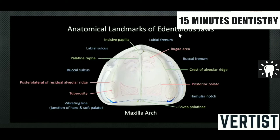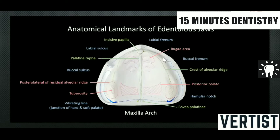In the upper edentulous arch, the anatomical landmarks include: incisive papilla, mid-palatal rugae, palatal rugae, alveolar crest, labial frenum, labial sulcus, buccal frenum, buccal sulcus, hamular notch, fovea palatinae, the posterior palatal seal area (cupid bow shaped), and maxillary tuberosity.